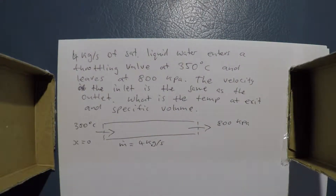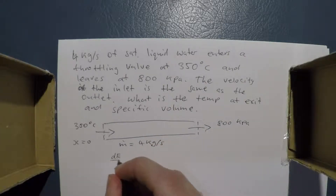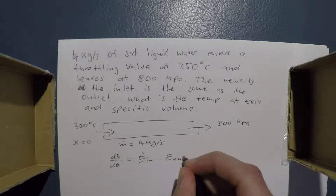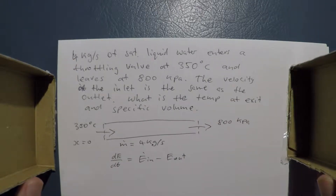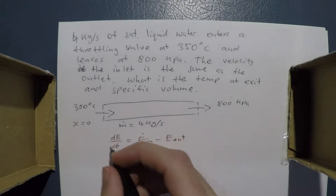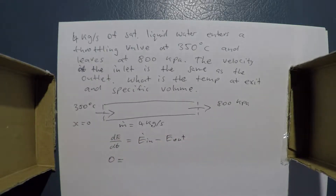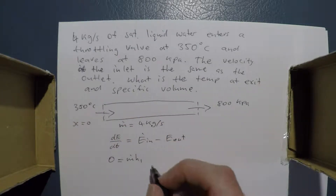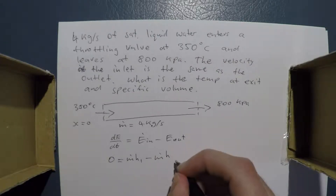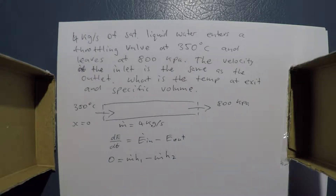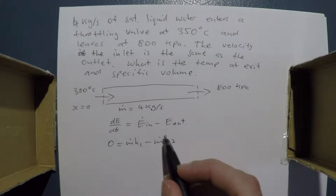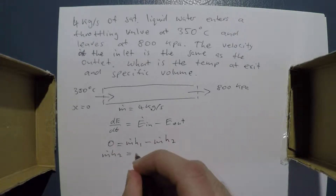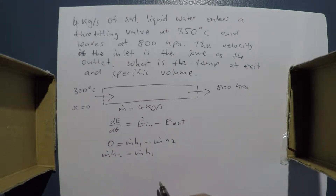We write our energy balance. The change of energy with respect to time, since it's steady flow, equals 0. This gives us the mass flow rate multiplied by H-in minus the mass flow rate multiplied by H-out equals 0. We can rearrange by adding the mass flow rate times H-out to both sides.